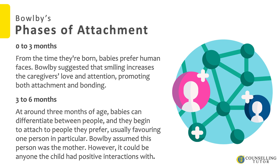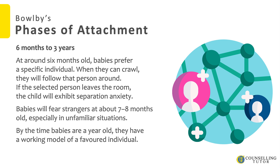From six months to three years, babies prefer a specific individual. When they can crawl, they will follow that person around, and if the selected person leaves the room, the child will exhibit separation anxiety. Babies will fear strangers at about seven to eight months, especially in unfamiliar circumstances or situations. By the time babies are a year old, they have a working model of a favoured individual.